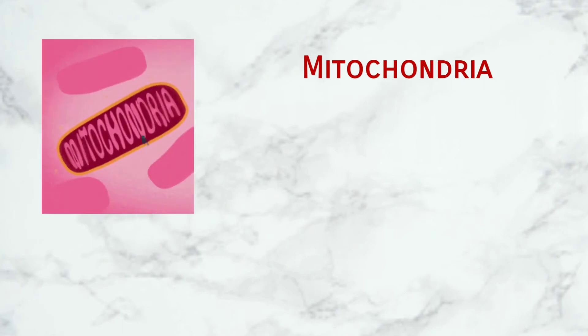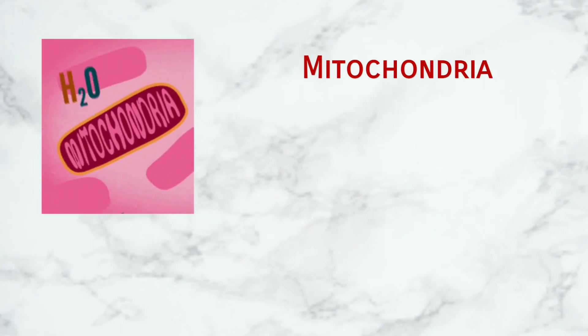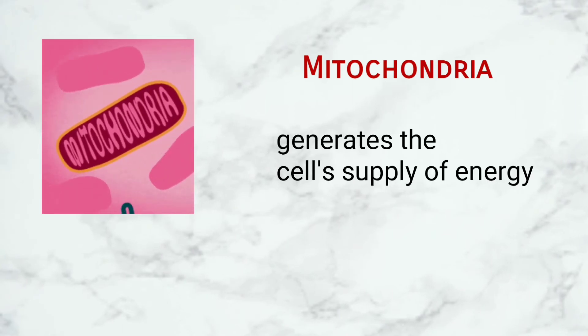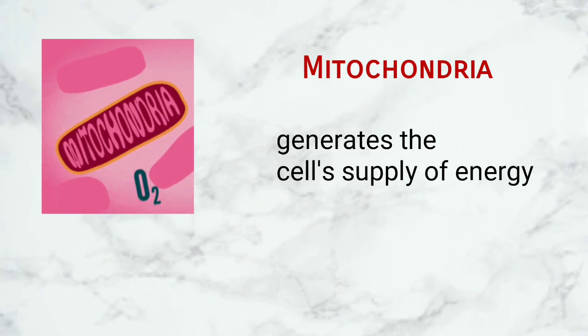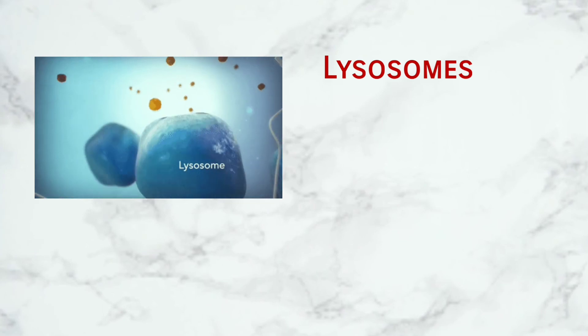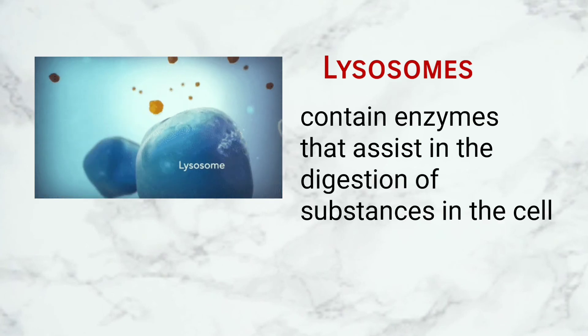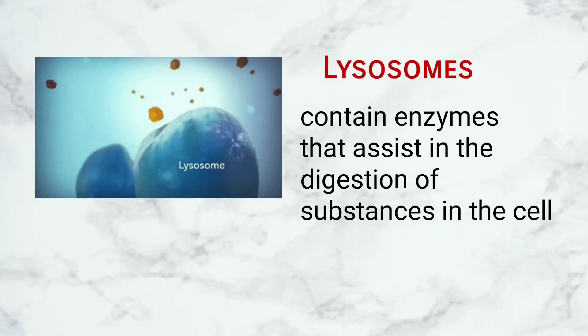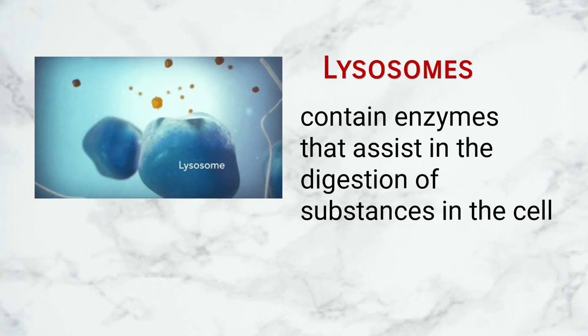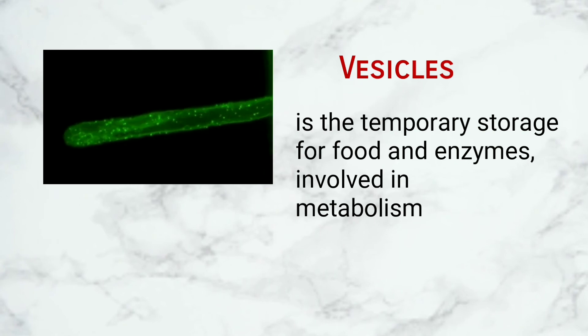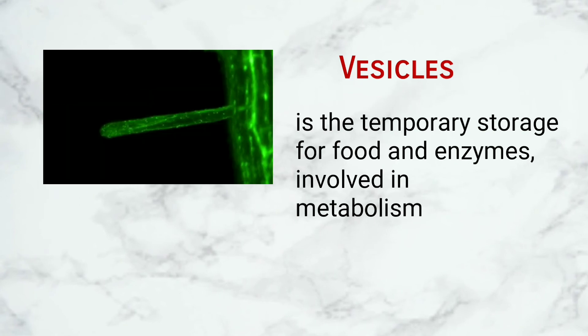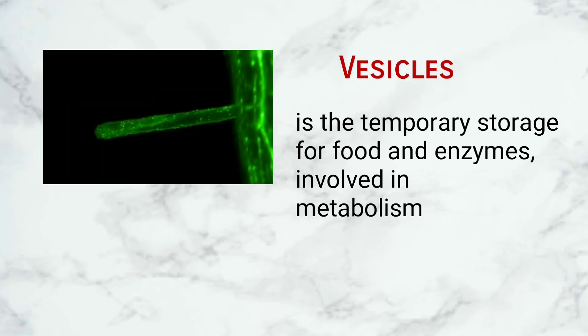Mitochondria: The mitochondria generates the cell's supply of energy. Lysosomes: The lysosomes contain enzymes that assist in the digestion of substances in the cell. Vesicles: The vesicles serve as temporary storage for food and enzymes involved in metabolism.